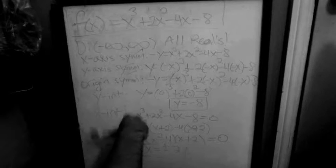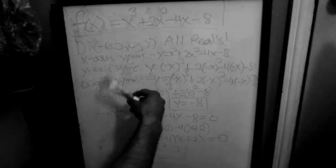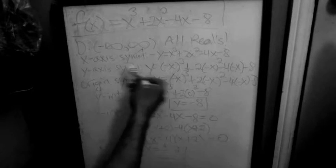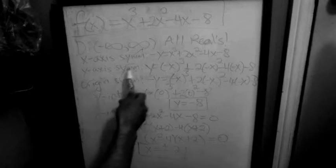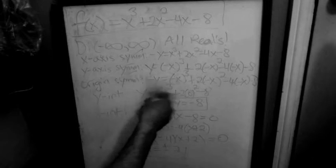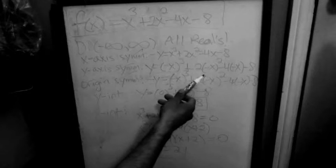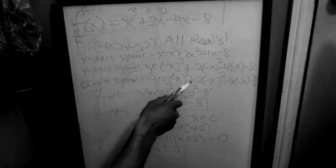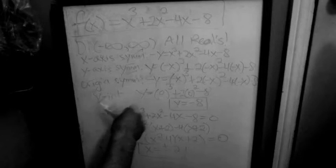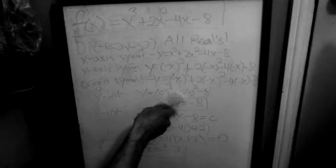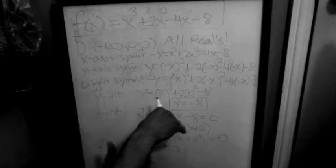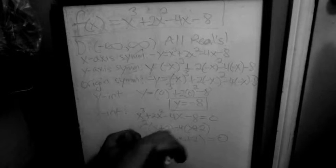Let's begin with symmetry. For x-axis symmetry, I plug in a negative for y and check if we return to the original function — that's clearly not going to work. For y-axis symmetry, substituting negative x for all x's also does not return the original function. Trying origin symmetry with both negative y and negative x also fails. So there is no symmetry for this function.